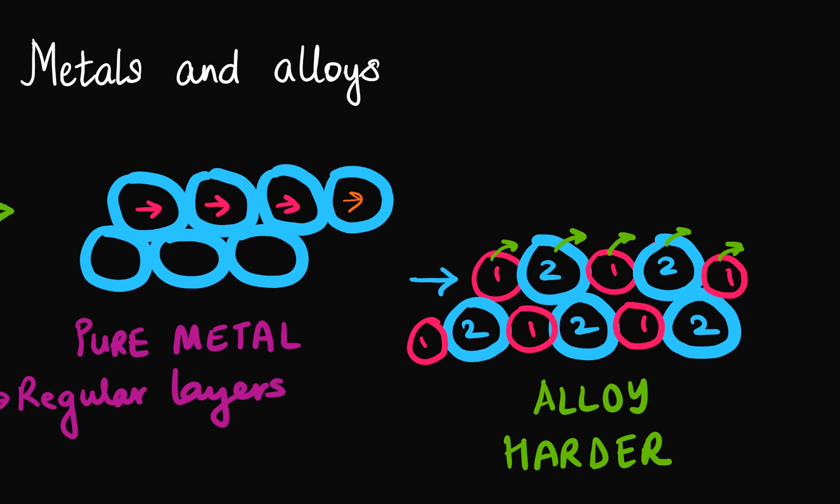Because it consists of atoms which have come from different metals and because they are of different sizes this prevents the layers from sliding past over each other easily, as against the case of pure metals. And that's the reason why alloys are harder as compared to pure metals. So that's all in today's video on metals and alloys and basically why alloy is harder as compared to a pure metal.